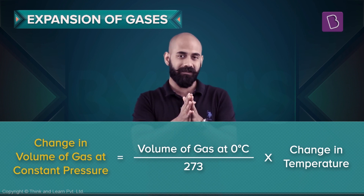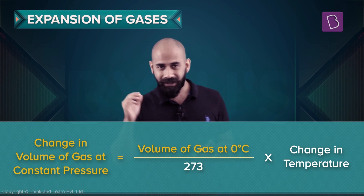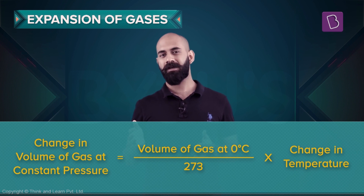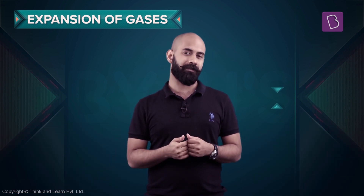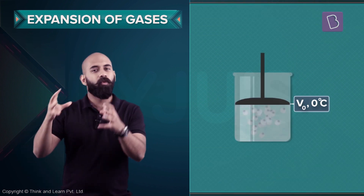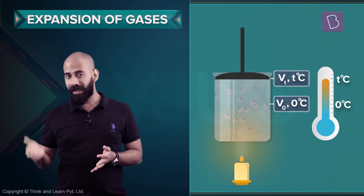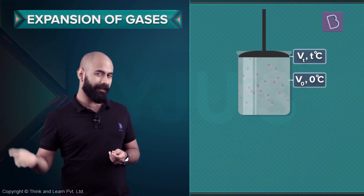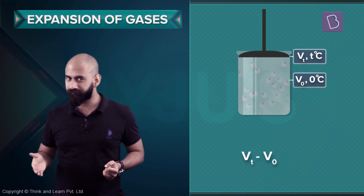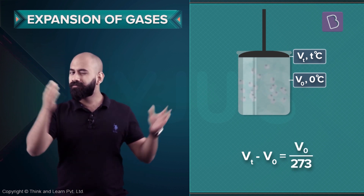The change in volume of a gas when you're changing the temperature is equal to the volume of the gas at zero degrees Celsius divided by 273, into the change in temperature. So let's say I have a gas at zero degrees Celsius and its volume is V₀, and then I increase the temperature to T degrees Celsius and the volume at that point is VT. This means that VT minus V₀ is equal to V₀ divided by 273, into T.